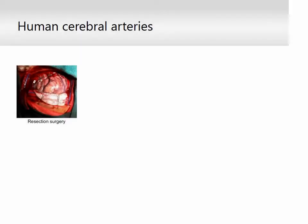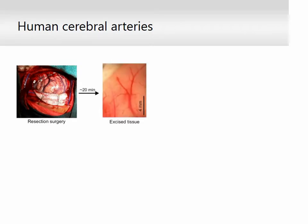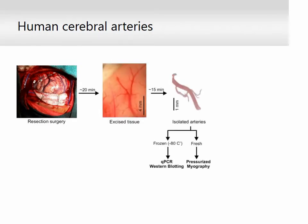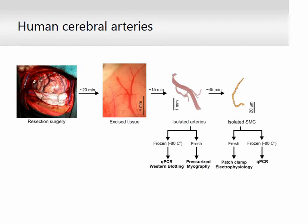In this study, we used human brain tissues from resection surgeries. Cerebral arteries were isolated and subsequently frozen for expression analysis, or acutely used for pressurized myography to assess reactivity to intraluminal pressure. Alternatively, cerebral arteries were enzymatically digested to isolate arterial smooth muscle cells, which were used for patch clamp electrophysiology or frozen for PCR analysis.